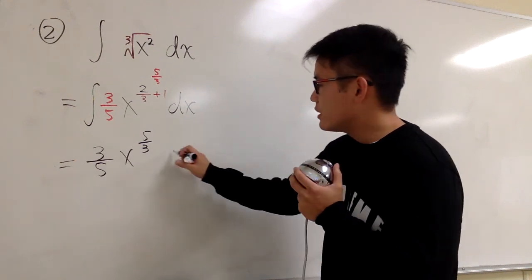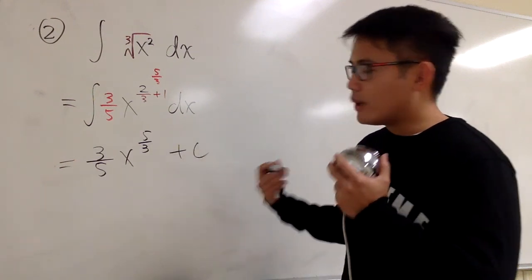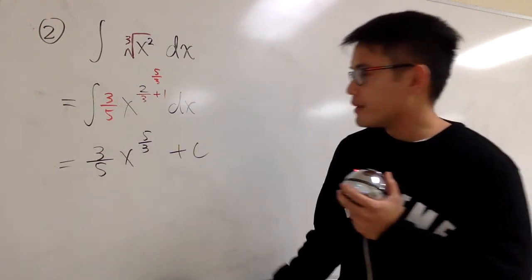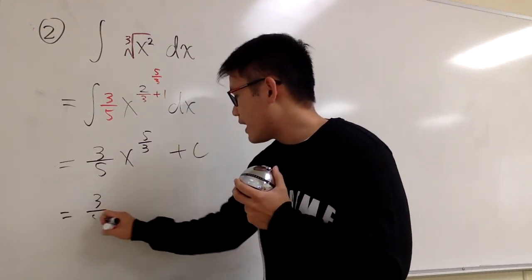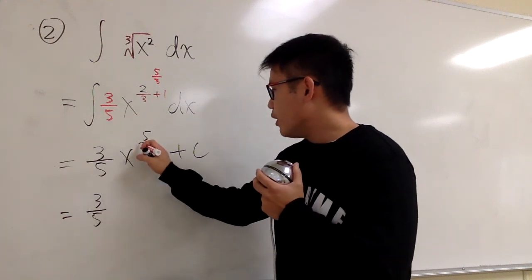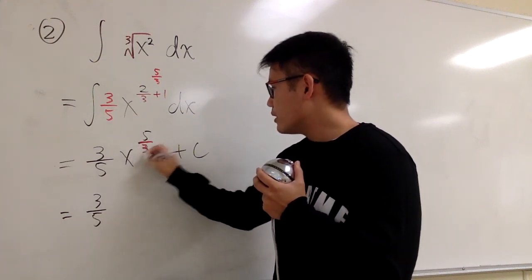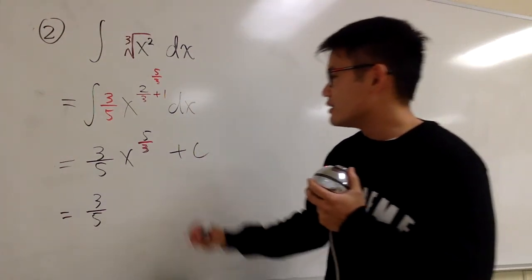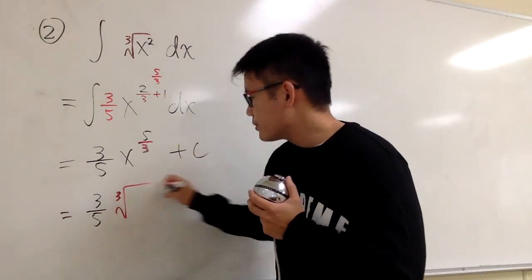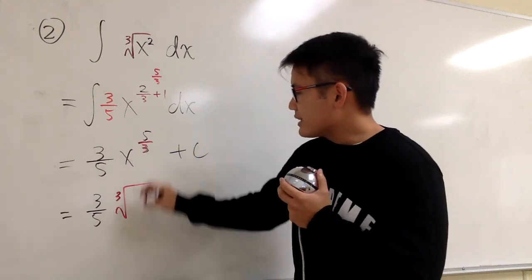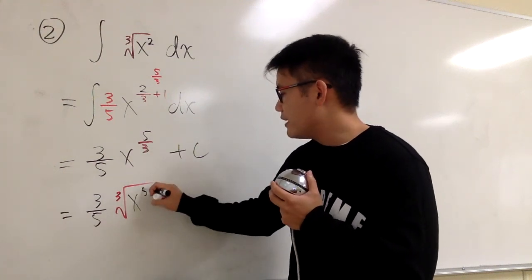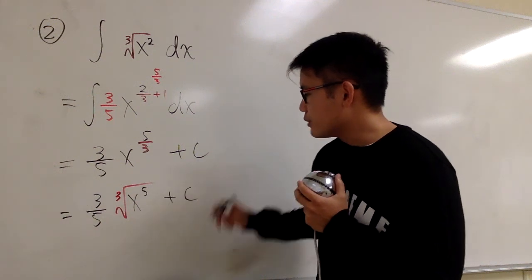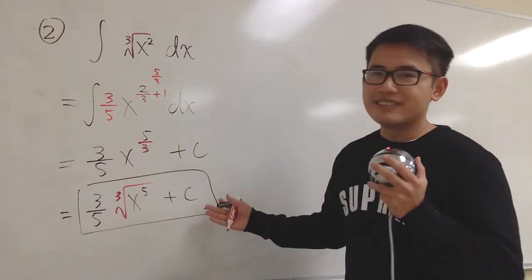Technically, this is it — put a plus c. But you may sometimes need to rewrite this back to the root form. So: 3/5, and then the over-3 power changes back to the third root. We have the cube root of x to the 5th inside, and then put a plus c on the outside. This is the answer.